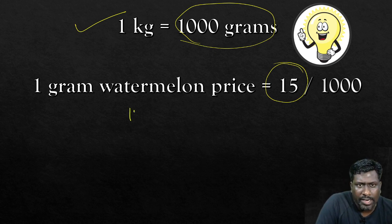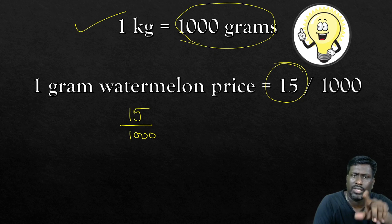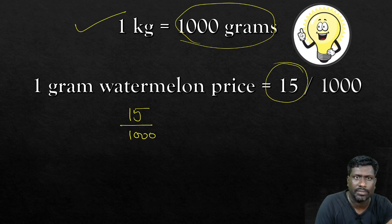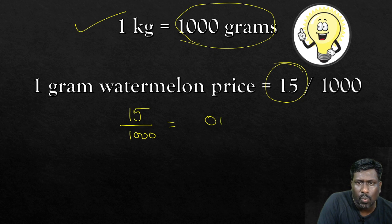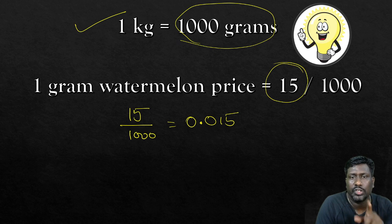If I divide it by 1000, how to do that? How many zeros you have? In denominator, if you have 3 zeros or 2 zeros or 1 zero, what you have to do is everything is common. I have 3 zeros here because I am dividing it by 1000. If you have 3 zeros, just keep the decimal point before 3 digits. I only have 2 digits, so what I do is write 0, and keep the decimal point here. Before 3 digits, you should have the decimal point. So 1 gram watermelon price is 0.015.